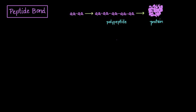Let's talk about the peptide bond. Proteins are formed from the folding of polypeptide chains, and polypeptide chains are formed by linking amino acids together. These links are called peptide bonds.